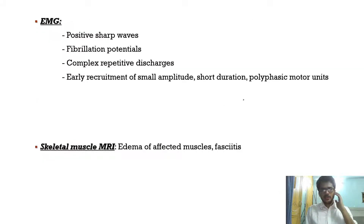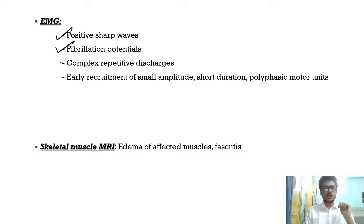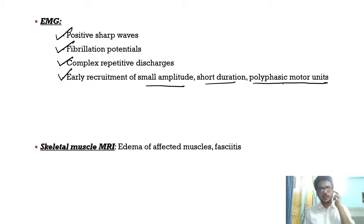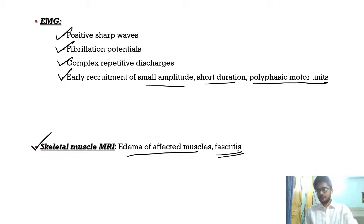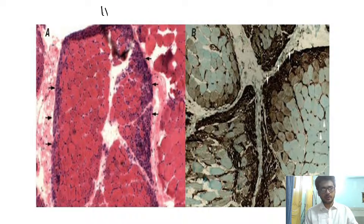On EMG you will have non-specific findings — positive sharp waves, fibrillation potentials, complex repetitive discharges, and early recruitment of small amplitude, short duration polyphasic motor units. None of these are specific for dermatomyositis; they can be seen in any inflammatory myopathy. Skeletal muscle MRI can show edema of the affected muscles along with fasciitis.